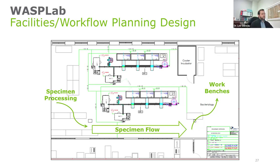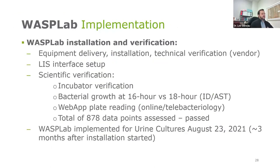This is just what our lab looks like. We have two WASP Lab lines, three double incubators, and four WASP pre-analytical modules. These are fed through the lines and offloaded to be taken to workbenches on the right-hand side. For installation and verification: LIS interface setup was a lot of work. Scientific verification — we looked at the incubators and verified a shorter incubation period because of optimal growth conditions, changing our cultures from 18 hours to 16 hours. We had to verify the performance of staff to do telebacteriology — looking at plates on a monitor rather than physically. The WASP Lab was fully implemented for urine cultures in August 2021, approximately three months after installation had started.